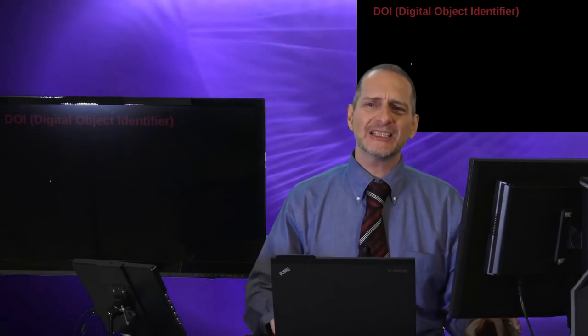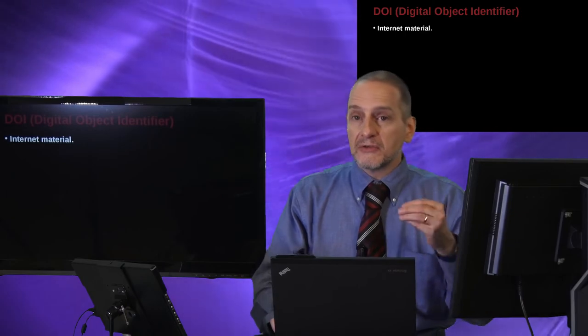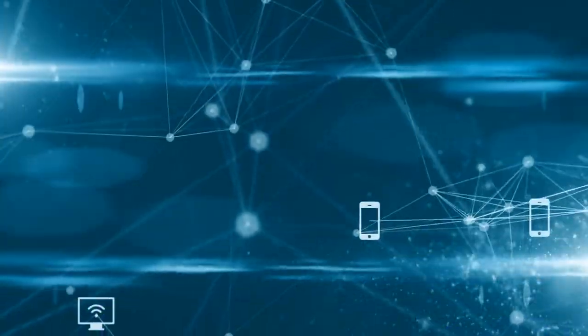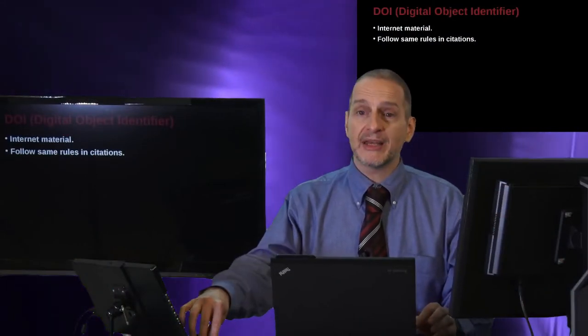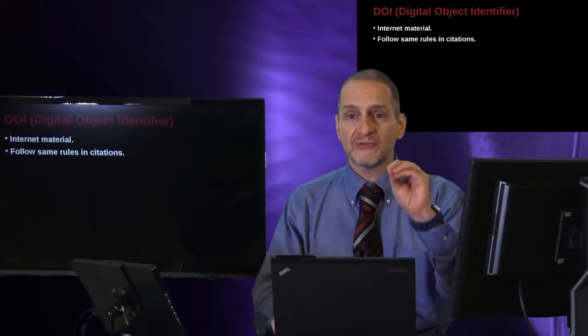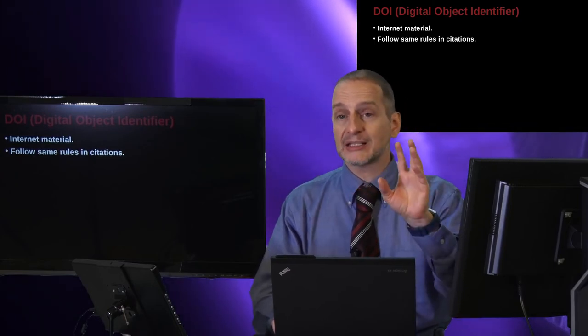Lastly, we have something called the DOI, or the Digital Object Identifier. And the Digital Object Identifier is something that's kind of new. And it's a way for us to cite information that is findable or discoverable on the internet or through databases. And of course, the idea here is we want to have a number so that we can find information in the future, and that location does not change.